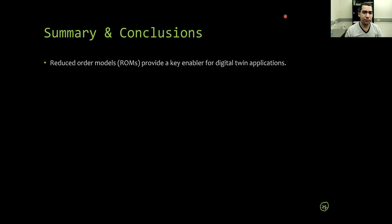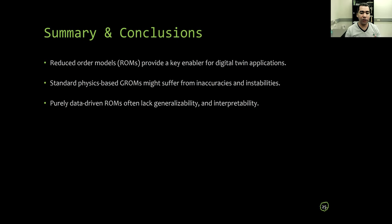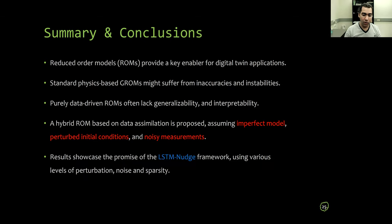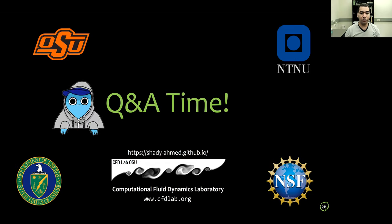To wrap up, we envision that reduced order models can provide a key enabler for digital twin applications. On one extreme, standard physics-based Galerkin ROM might suffer from inaccuracies or instabilities. On the other extreme, purely data-driven models often lack generalizability and interpretability. We propose a hybrid ROM in a data assimilation framework to combine imperfect models and perturbed initial conditions with noisy measurements to improve our predictions. And here we showcase the promise of the LSTM-nudging framework and its robustness to different levels of noise and sparsity. Thank you for tuning in and now I will be happy to take any questions that you might have. Thank you.